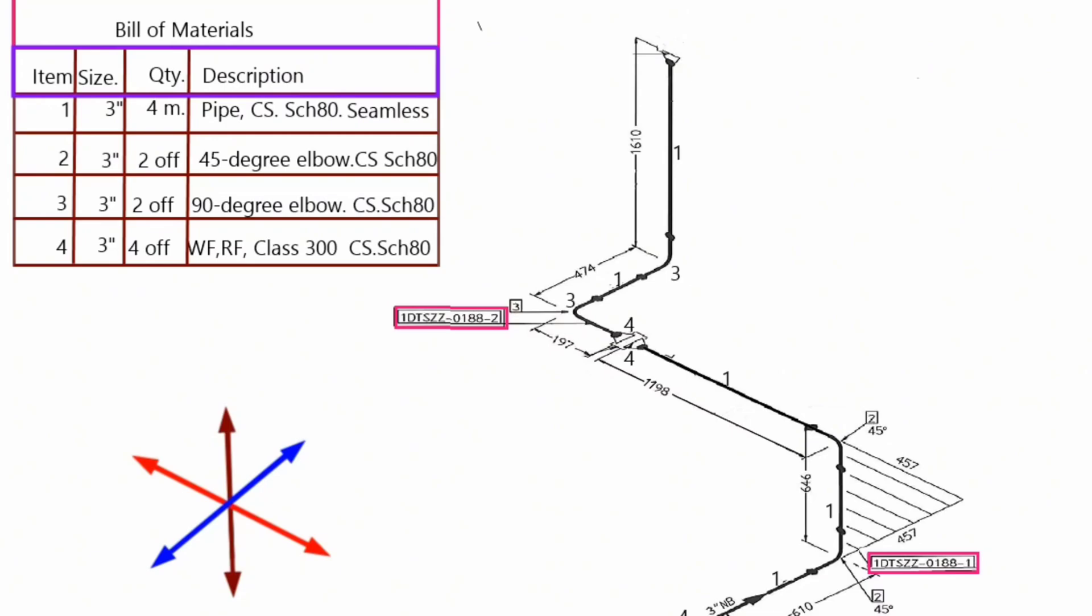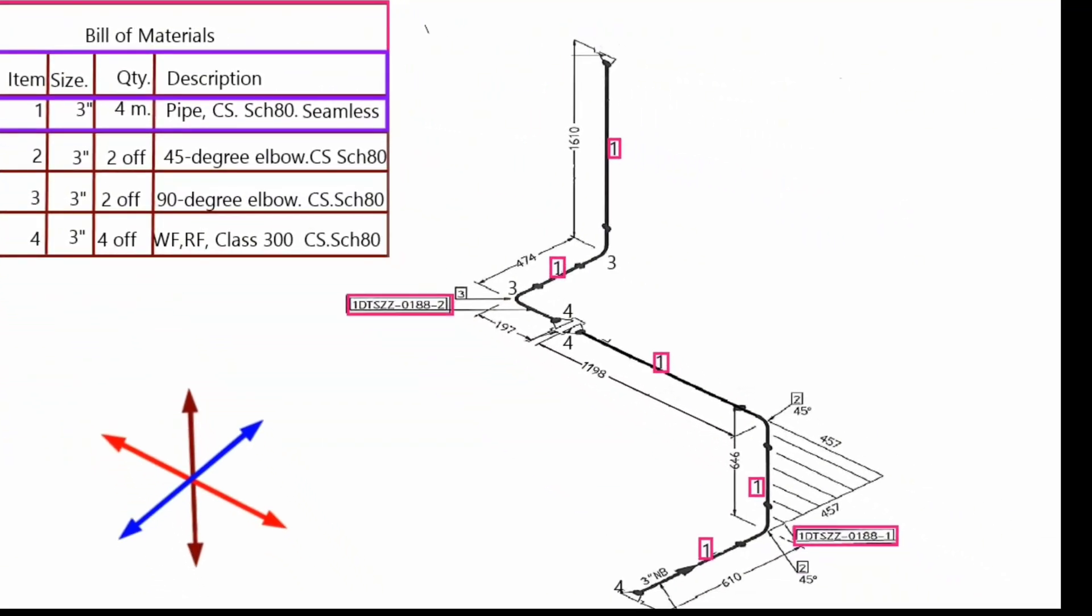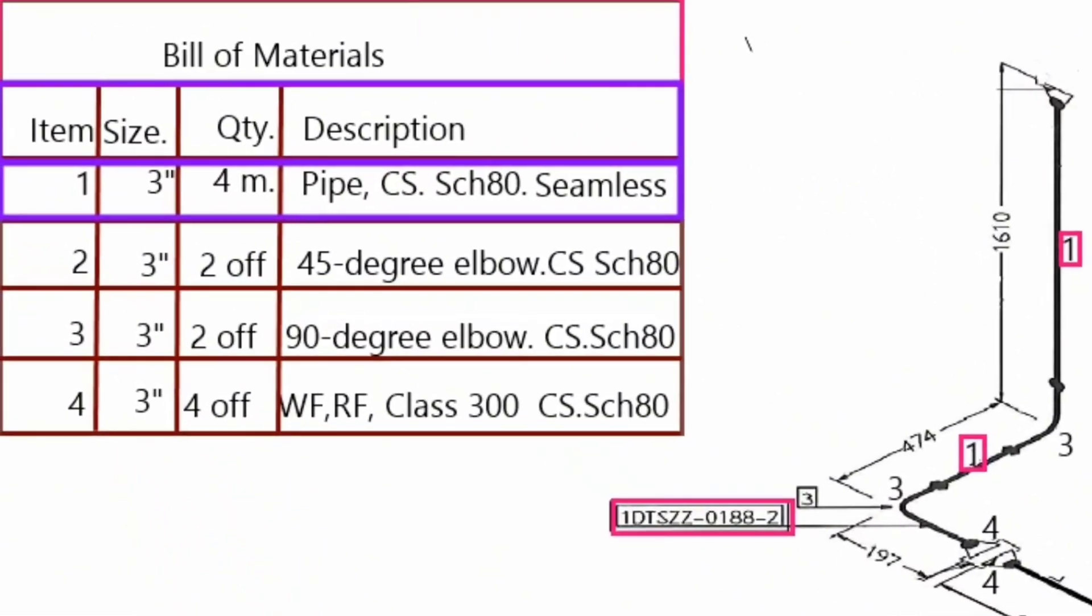Now let's learn the name and number of pipe fittings used in the pipeline. Item number 1 is shown in several places on the pipe drawings. Now let's look at the bill of materials.